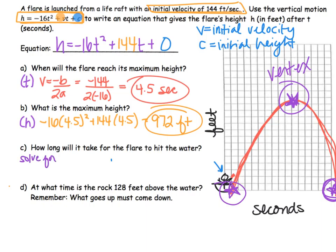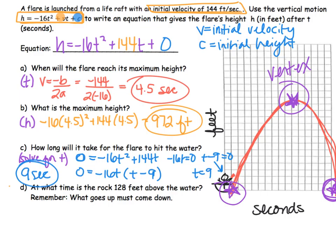Solve for t, which is our x values. And so I'm going to say 0 because that's what we want h to be. We want the height to be 0 equals negative 16t squared plus 144t. And you can solve by any method you would like. I decided to solve by factoring and I got t equals 9 seconds.